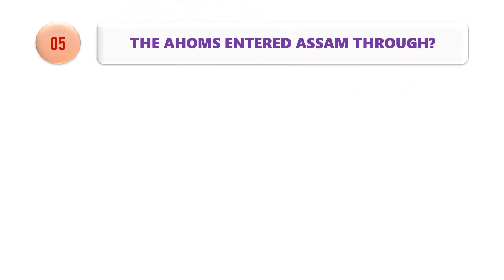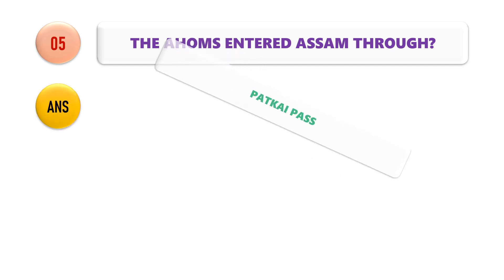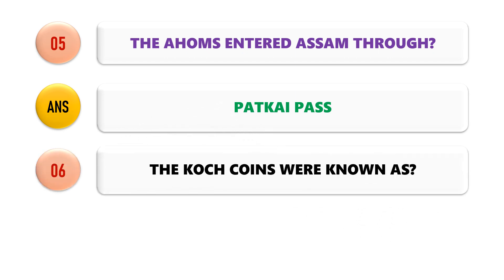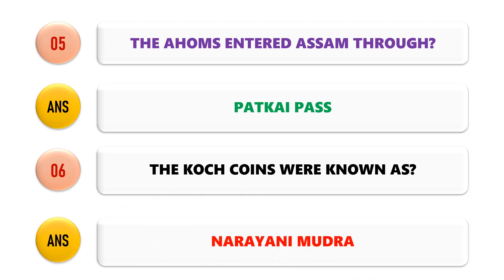Question No. 5: The Ahoms entered Assam through which pass? The Ahoms entered Assam through Patkai Pass. Question No. 6: The Koch coins were known as? The Koch coins were known as Narayani Mudra.